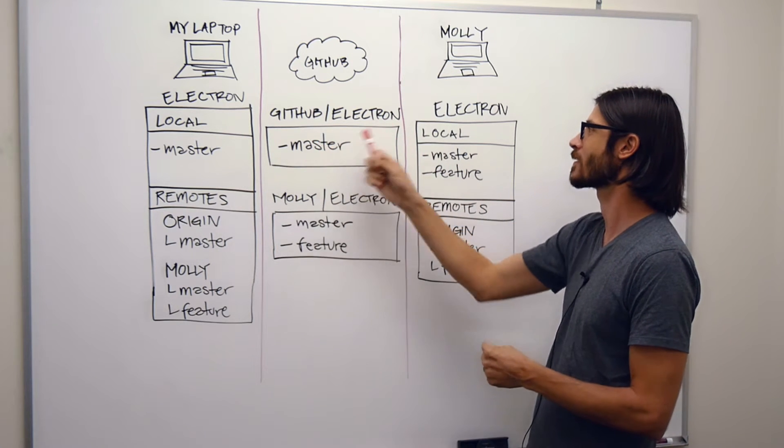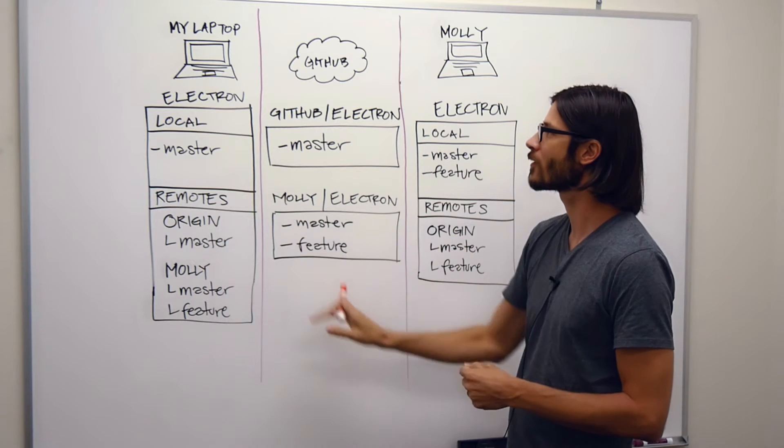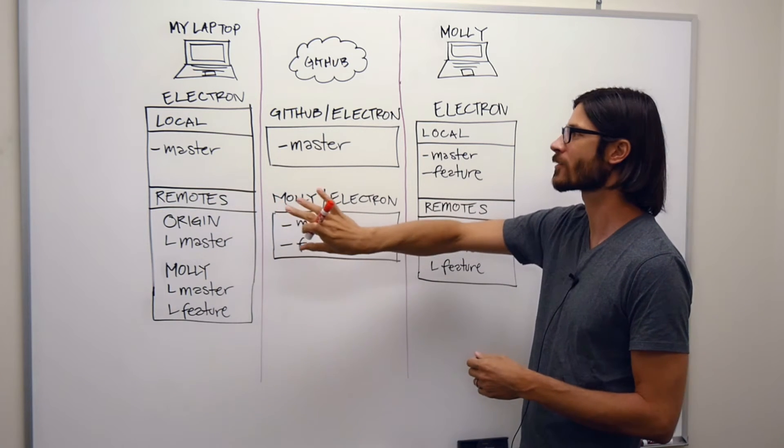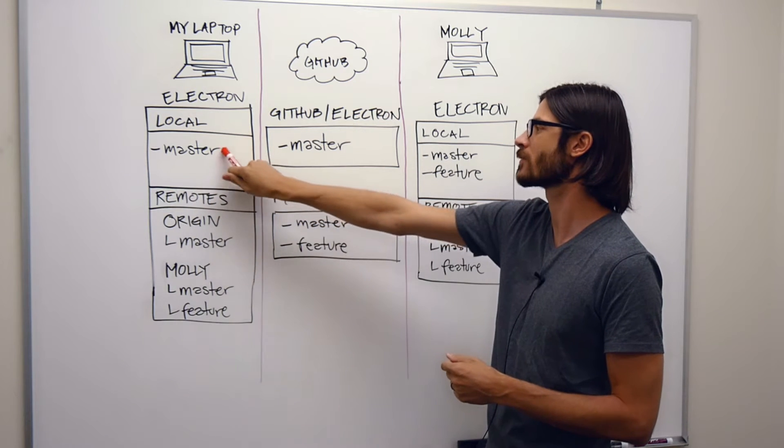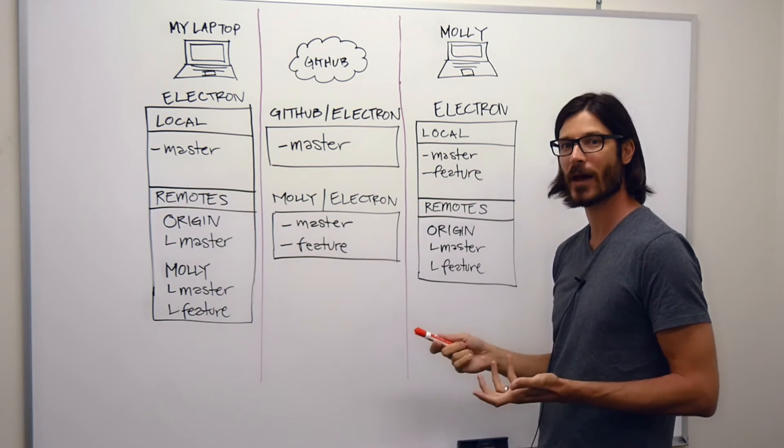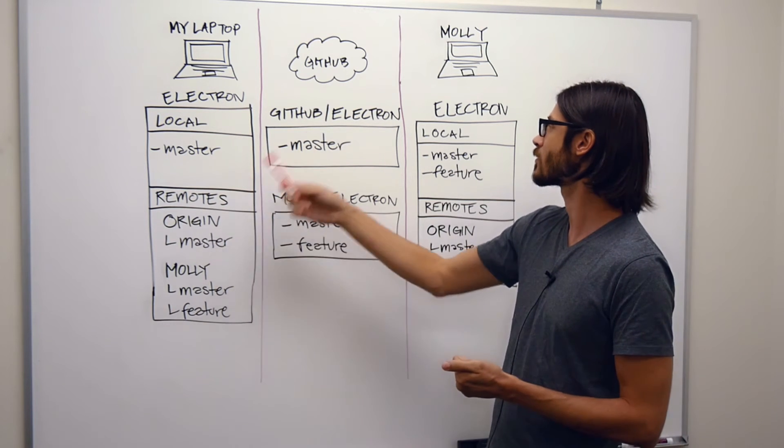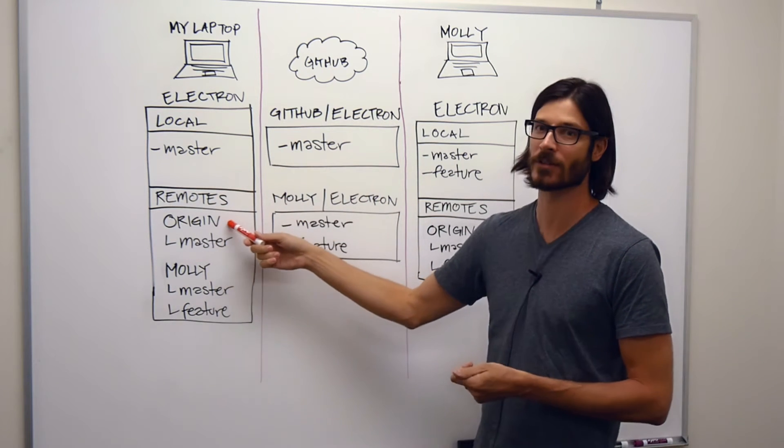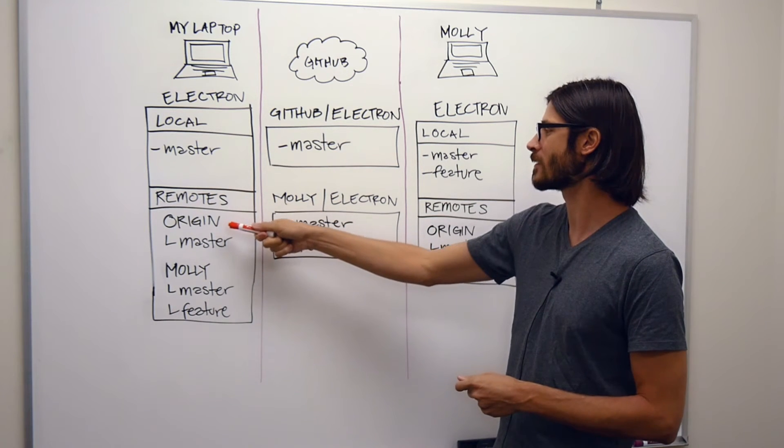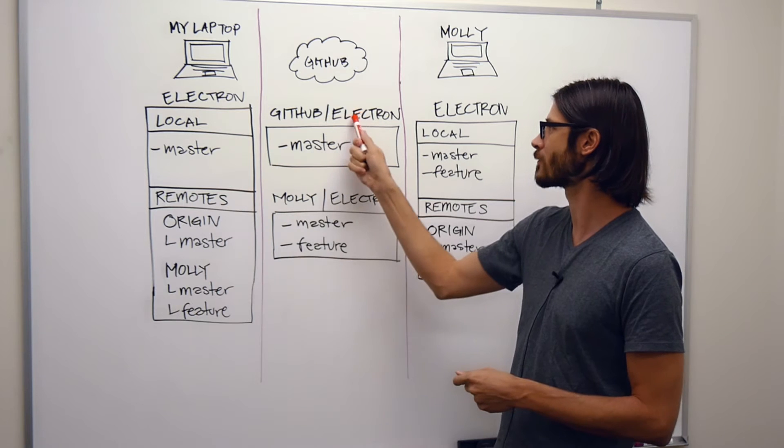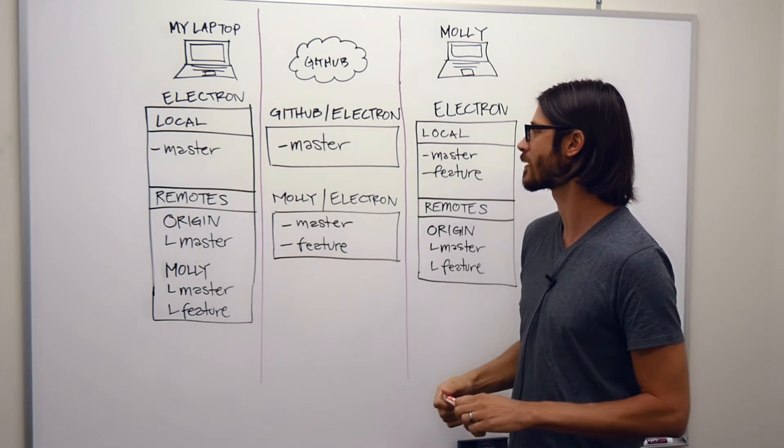So up in the cloud, GitHub has a repository called Electron with one branch called Master. I clone that to my machine, and what it does is it creates a local copy of the branch that's on that repository, which is Master, and Git automatically sets up a connection, a remote connection, to that repository, and it names it Origin. So if you've ever seen Origin, that's where that's coming from. So down here in my remote section, I see the origin remote, which is referring to GitHub's Electron up in the cloud, and it's one branch that it has.